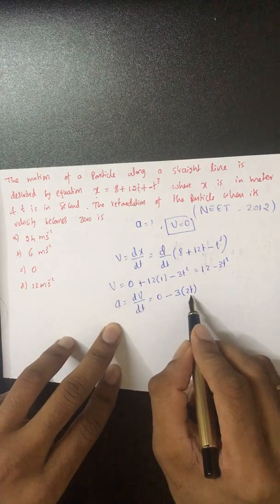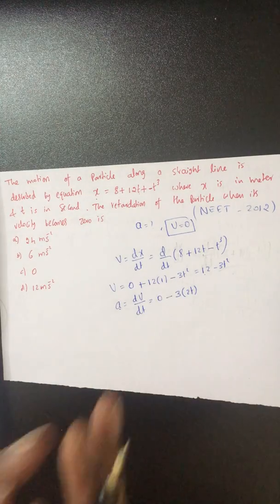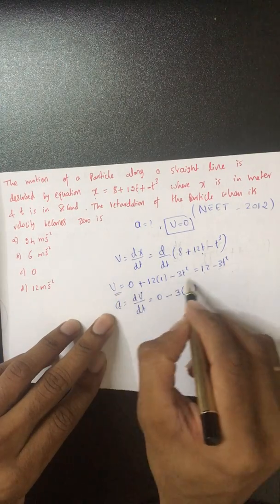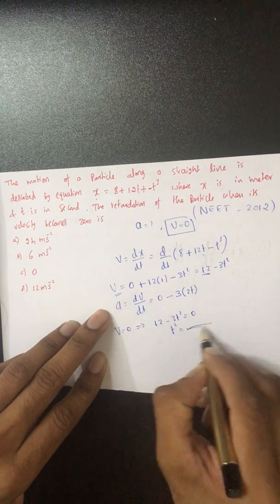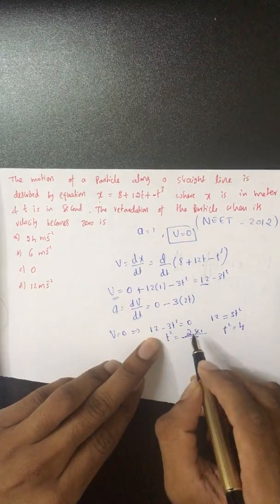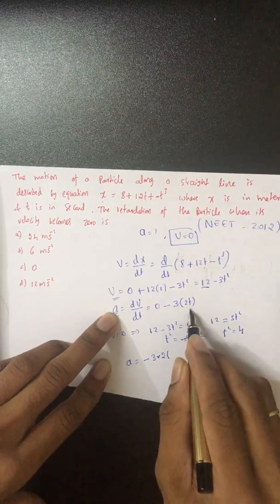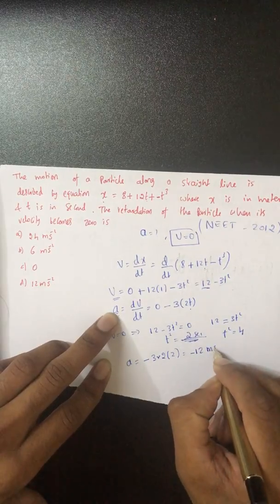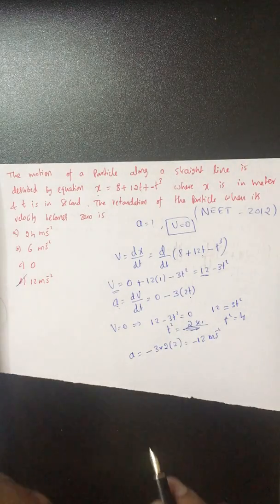This acceleration is again a function of time. They asked for retardation when velocity becomes zero. Setting v equals 0: 12 minus 3t squared equals 0, so 3t squared equals 12, t squared equals 4, giving t equals 2 seconds. At t equals 2, acceleration equals minus 3 times 2 times 2 equals minus 12 meters per second squared. So retardation is 12 meters per second squared.